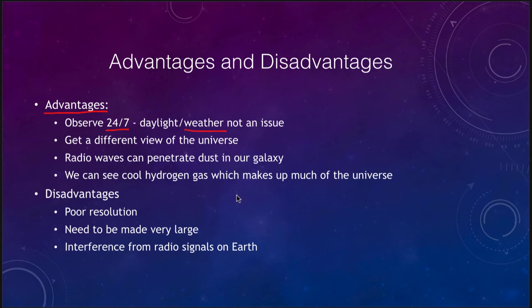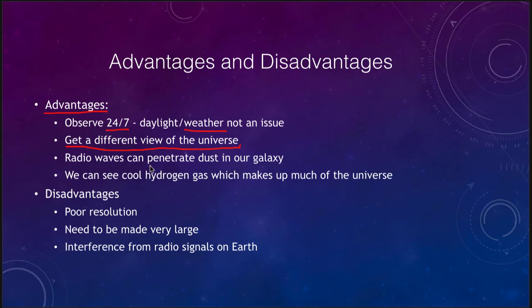Weather is not much of an issue either — if it's raining or snowing, you can still observe with a radio telescope. If you have a thunderstorm with electrical discharges in the atmosphere, you would not be able to get accurate observations due to interference. But another key advantage is that you get a completely different view of the universe — radio waves penetrate dust and allow people like Carl Jansky to detect radio emission from the center of our galaxy, which we cannot see in visible light because there is too much dust in the way. We can also detect cool hydrogen gas that gives off no visible light but does give off radio wavelengths.